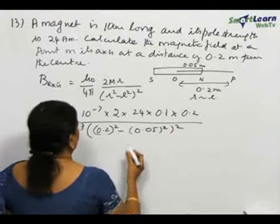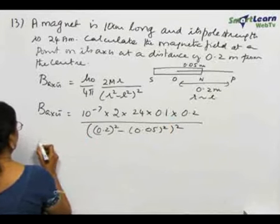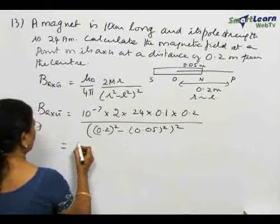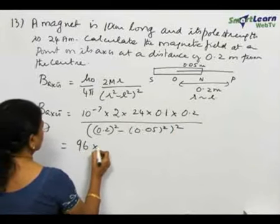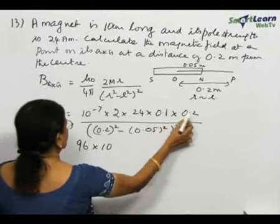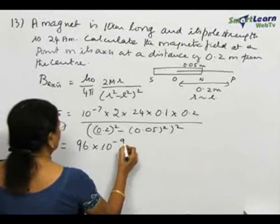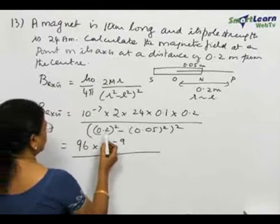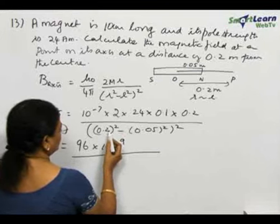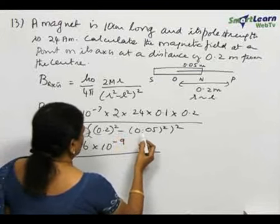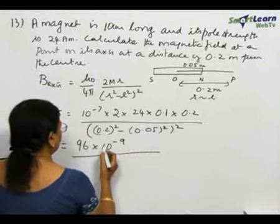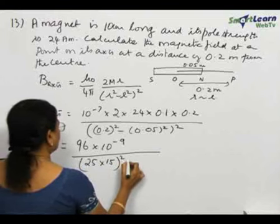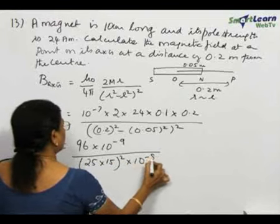So, this we can write as the simplification. So, 2 into 2, 4 into 24, 96 × 10⁻¹. This is minus 1, this is minus 1, it becomes 10⁻⁹ divided by, we can take this as 20 × 10⁻², the whole square. So, this will become 25 × 15, the whole square × 10⁻⁸.